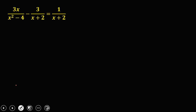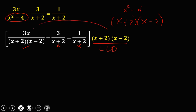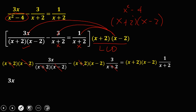For the last example, check the denominators. We can factor x squared minus 4 as x plus 2 times x minus 2. This is the new equation. The LCD: write the first denominator x plus 2 and x minus 2; the second denominator already has x plus 2 so no need to add; so the LCD is x plus 2 times x minus 2. Distribute to every term: one term minus another term equals the third. Simplify by cancelling x plus 2 and x minus 2, giving 3x; cancel x plus 2, leaving 3 times x minus 2; cancel x plus 2, leaving x minus 2 times 1.